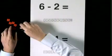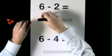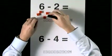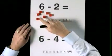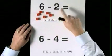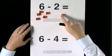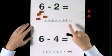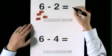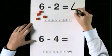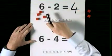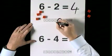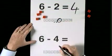6, take 2. 6, take 2. 1, 2, 3, 4, 5, 6. Take two. Take one, take two. Leaves one, two, three, four. Six take two makes four. Six take one, two makes four.